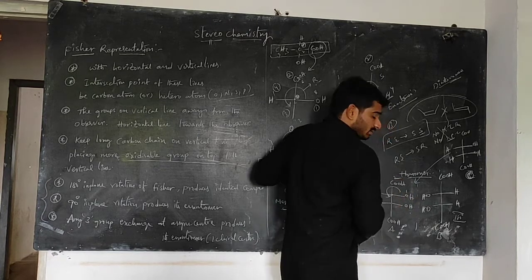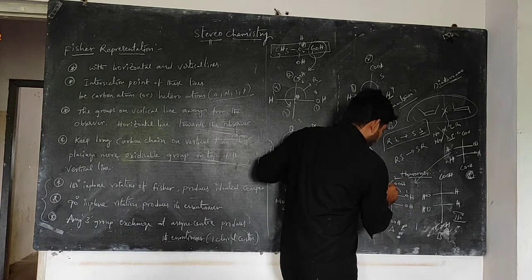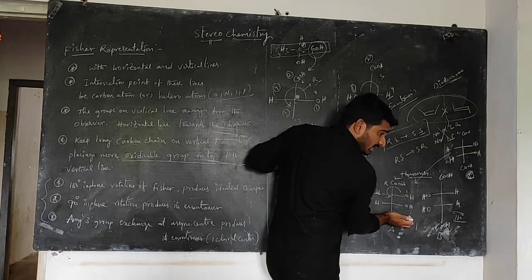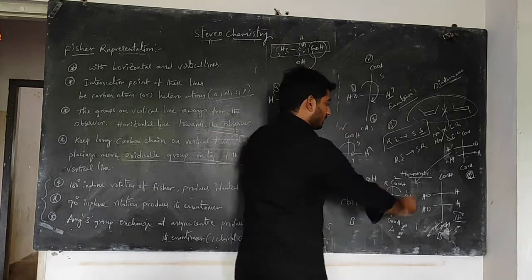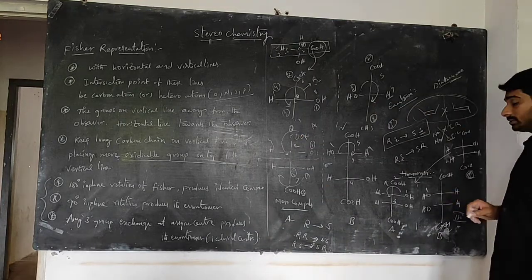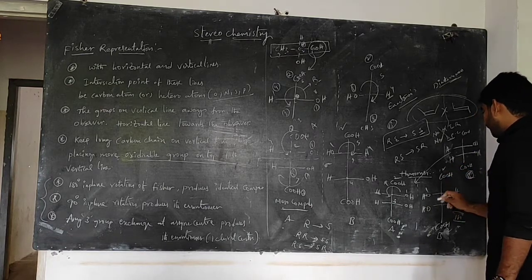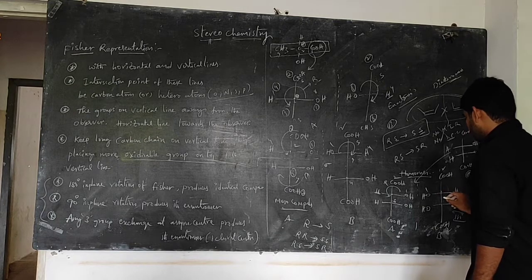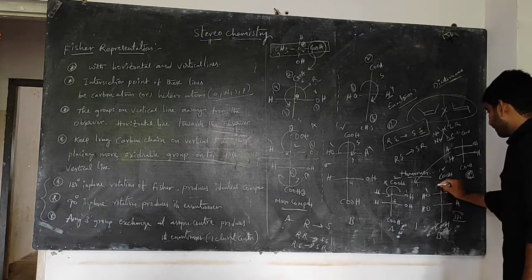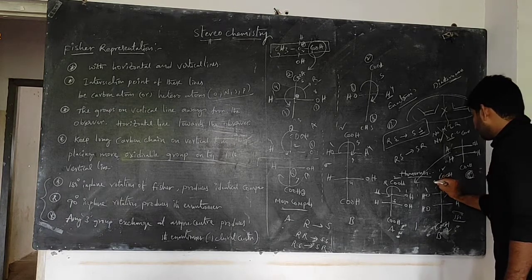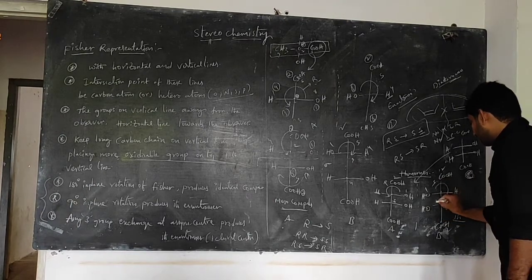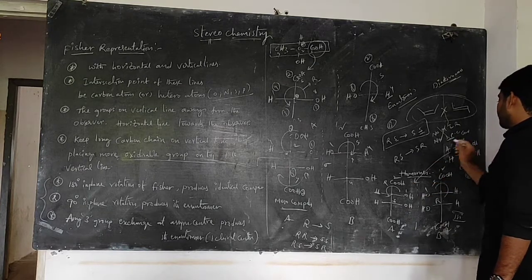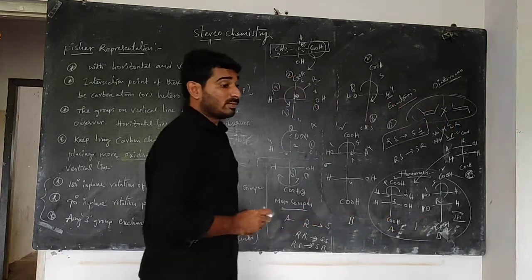Writing the configuration: for the first meso compound, going 1→2→3 clockwise and checking the least priority group position gives R at top carbon. Since the molecule is symmetric, the bottom is the mirror of the top giving S. After 90-degree rotation, checking the resultant configuration: it gives R and S — mirror image relationship, non-superimposable — these two are enantiomers. So the relationship between the meso compound and its 90-degree rotated form is enantiomers.